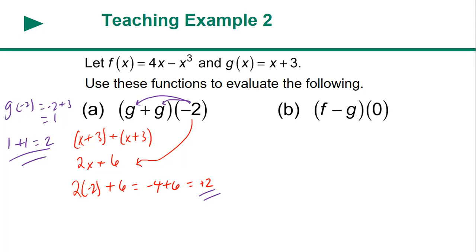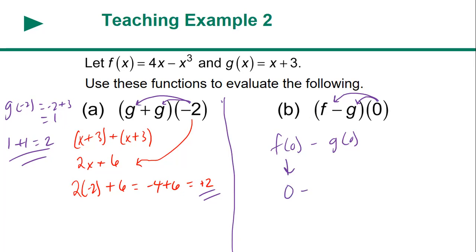The other way is to plug in negative two first. G(−2) = −2 + 3 = 1. It's going to be the same for both, so 1 + 1 = 2. We still get the same answer. So you can either combine your functions first and then substitute in for X, or substitute in for X and then combine. For F − G at 0: F(0) = 0, G(0) = 3, so 0 − 3 = negative 3. You could have subtracted them first and still got the same thing. It's about which way you're most comfortable with.